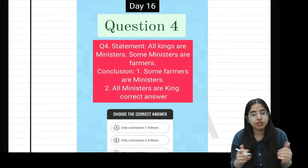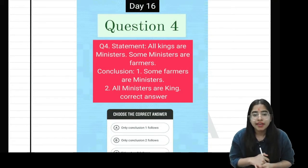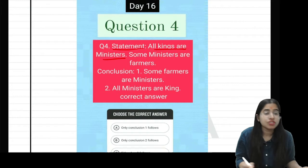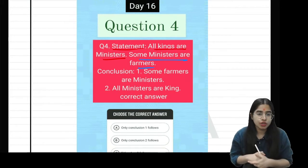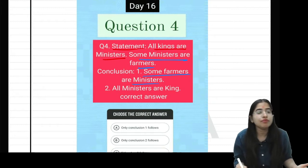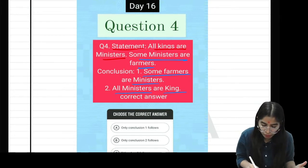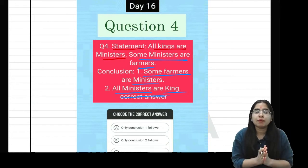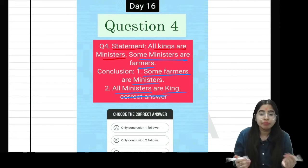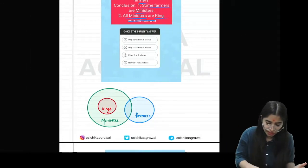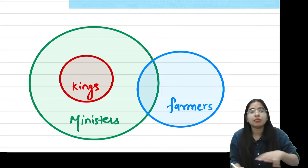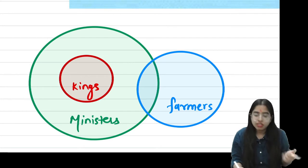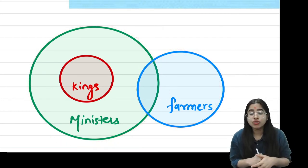Now let's see question number 4. The statements are: all kings are ministers, some ministers are farmers. Based on this, the two conclusions are: conclusion 1 is some farmers are ministers, and conclusion 2 is all ministers are kings. I'll tell you which conclusions are correct and which are wrong. Let's see the Venn diagram. First, all kings are ministers, so kings are inside ministers. Next, some ministers are farmers.